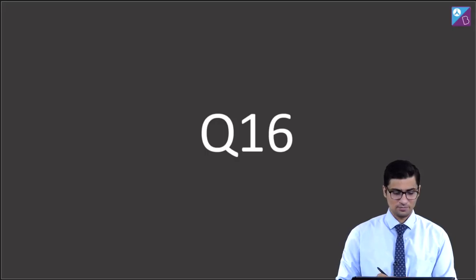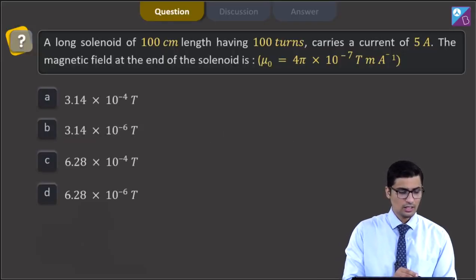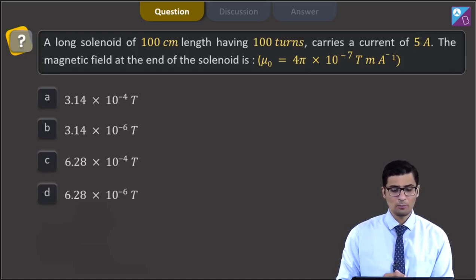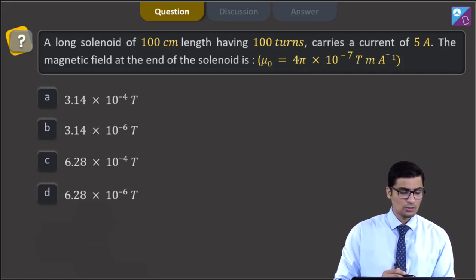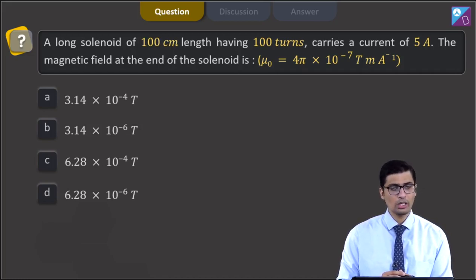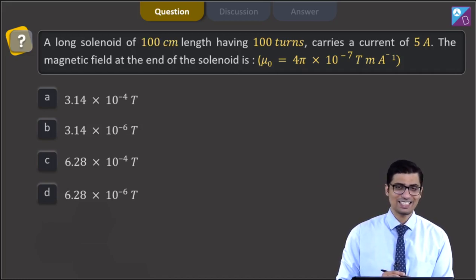This is question 16. A long solenoid of 100 centimeter length having 100 turns carries a current of 5A. The magnetic field at the end of the solenoid is, given that mu0 is equal to 4 pi into 10 to power minus 7 tesla meter per ampere. The four options are: 3.14 into 10 to power minus 4 tesla, 3.14 into 10 to power minus 6 tesla, 6.28 into 10 to power minus 4 tesla, or 6.28 into 10 to power minus 6 tesla.